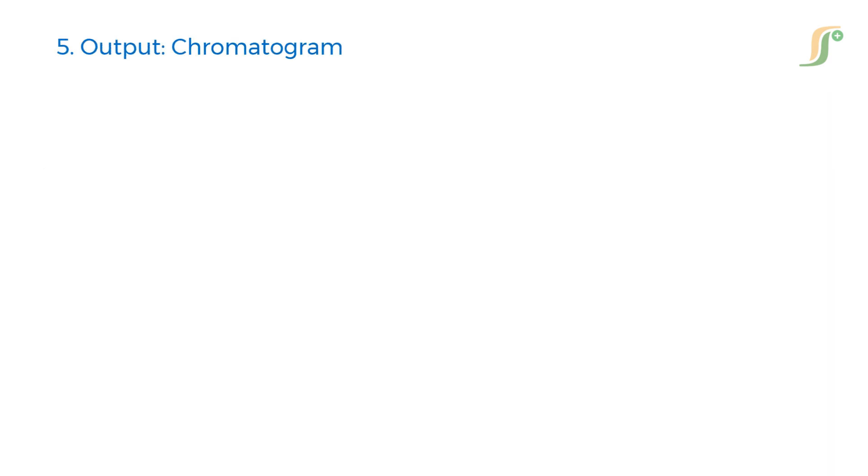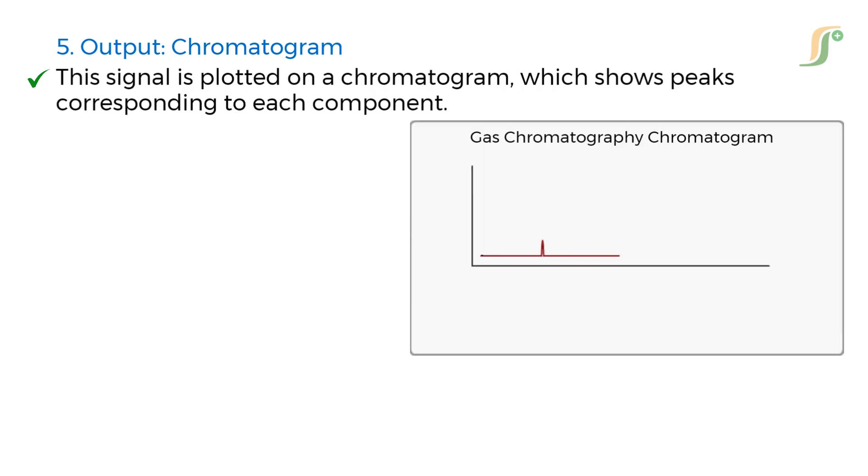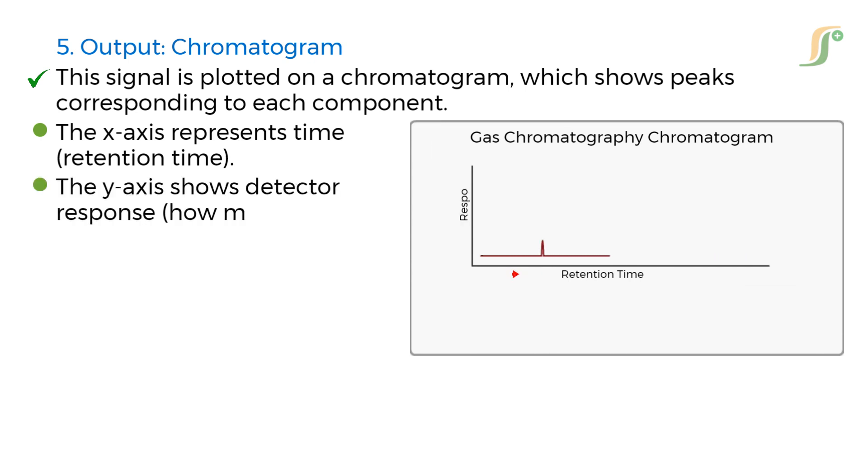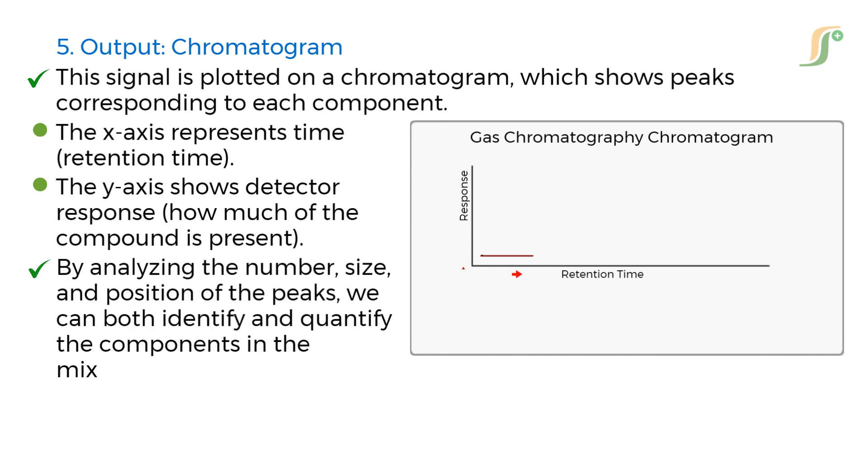Fifth step is output in the form of a chromatogram. This signal is plotted on a chromatogram, which shows peaks corresponding to each component. The x-axis represents time, i.e. retention time. The y-axis shows detector response, how much of the compound is present. By analyzing the number, size, and position of the peaks, we can both identify and quantify the components in the mixture.